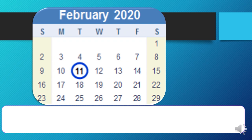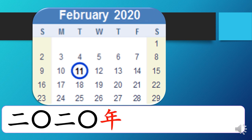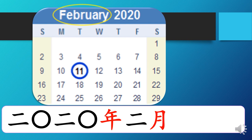Let's try another one. How do you say February 11, 2020 in Chinese? Good job! 2020 is 二零二零年. February is the second month of the year, so 二月. And 11 is 十一日. So February 11, 2020 is 二零二零年二月十一日.